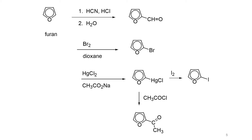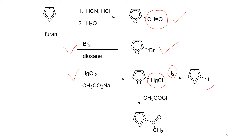In the Gattermann-Koch reaction with furan, an aldehyde group is substituted at position 2, giving 2-substituted furan. Bromination gives 2-bromofuran. When furan reacts with mercury chloride, a mercury chloride group is substituted at position 2. If this compound then reacts with iodine, the mercury group is replaced to give 2-iodofuran. Similarly, reaction with acetyl chloride replaces that group with an acetyl group. All of these are electrophilic substitution reactions.